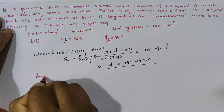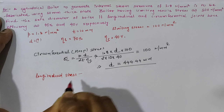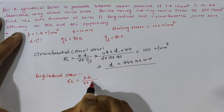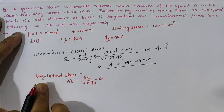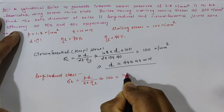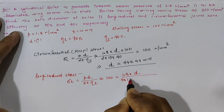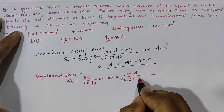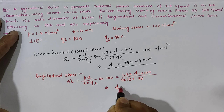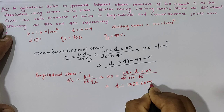Now calculating longitudinal stress: sigma_l = pd / (4t × efficiency). Setting the maximum longitudinal stress to 100 Newton per mm square, substituting pressure = 1.8, t = 10 mm, and longitudinal efficiency = 70/100, solving gives diameter = 1555.56 mm.